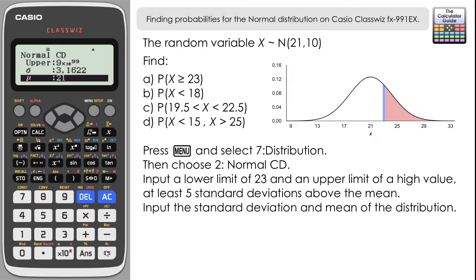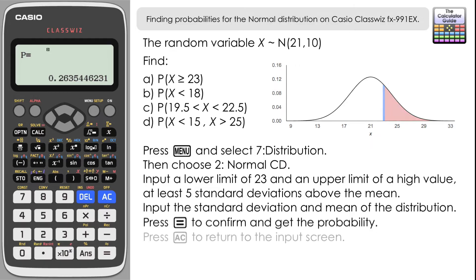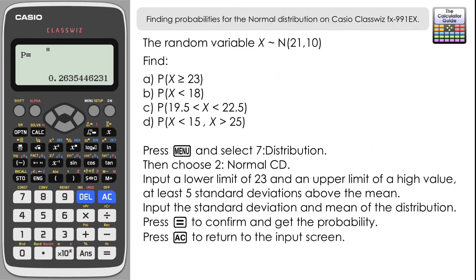Once we've entered the information, press equals to confirm and here we have our probability — the answer to part a is 0.2635, to four decimal places.